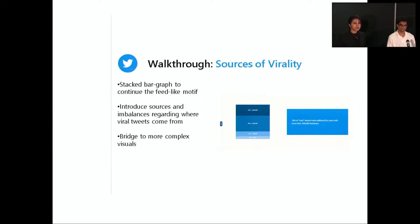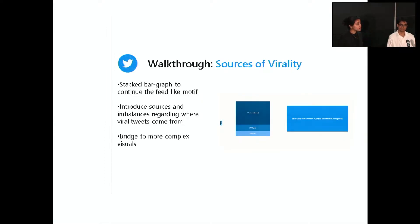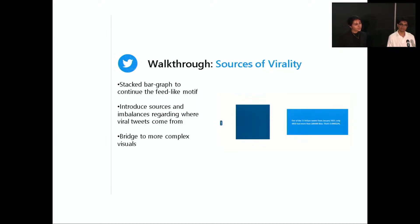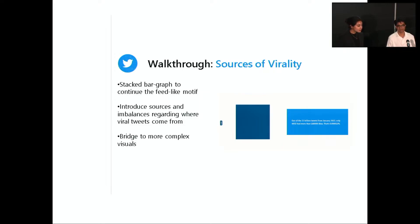The second thing people are introduced to is a very important graphic: sources of virality. This is an interactive stacked bar chart showing all the different sources where virality comes from, and it includes some surprising statistics. Unless you have more than a million followers, the likelihood of going viral is actually pretty low — over one-third of all viral tweets we calculated come from people with more than one million followers. The chart introduces you to different categories of viral tweet sources and different account sizes, and also shows how many tweets actually go viral — which may be a lot fewer than you think.